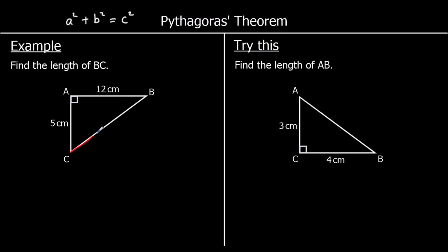So this is the longest side in this question. So a squared plus b squared equals c squared. The two shorter sides are a and b, and the longest side is c.